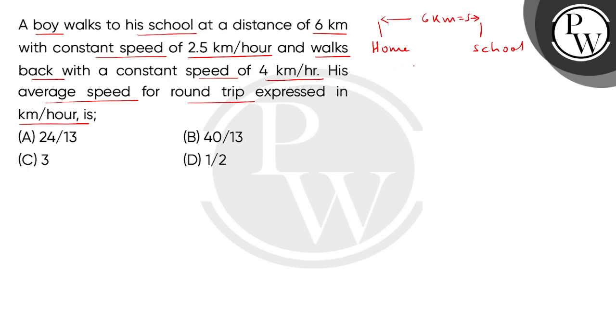Now children, when the boy goes home to school, we call this V1, then his velocity is 2.5 km per hour. And when he comes back to school, his speed is 4 km per hour. So we have to find the boy's average speed in km per hour.